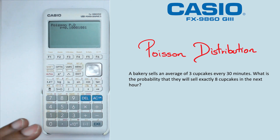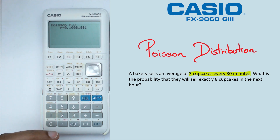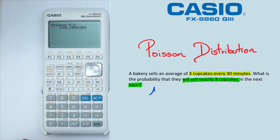Now looking at another question. This particular question says that we've got an average of three cups every 30 minutes, and we're looking for the probability of exactly eight cupcakes. Remember that this is actually four per hour, so our mean is actually going to be six — because it's six per hour — and we're looking for P(X = 8).